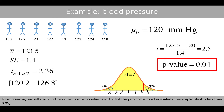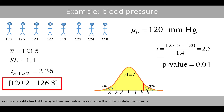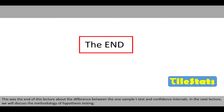To summarize, we come to the same conclusion when we check if the p-value from a two-tailed one-sample t-test is less than 0.05, as when we check if the hypothesized value lies outside the 95% confidence interval. This was the end of this lecture about the differences between the one-sample t-test and confidence intervals. In the next lecture, we'll discuss the methodology of hypothesis testing.